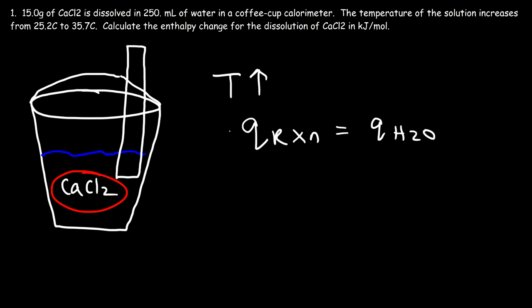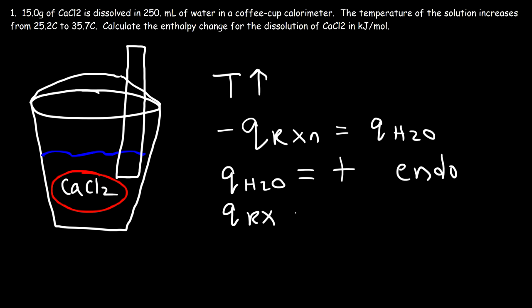We need to put a negative sign on one side of the equation. The system consists of the reactants and products; the surroundings is basically the water molecules. If the temperature goes up, that means water absorbed heat — the thermometer records the temperature of the water, so if temperature rises, the water molecules have more thermal energy. It's endothermic for the surroundings, but the system — the reaction — released heat, so the reaction is exothermic.